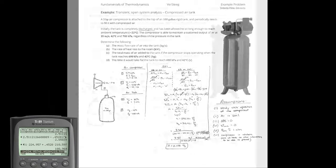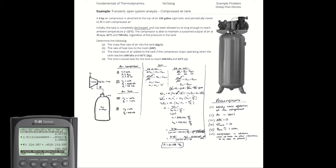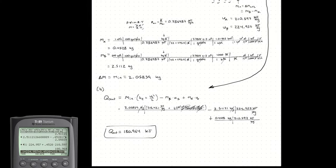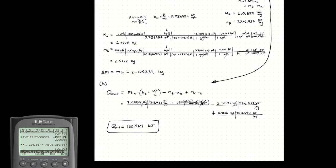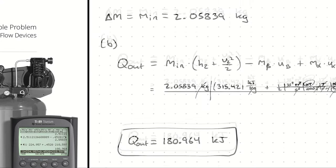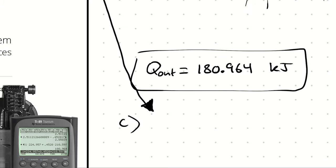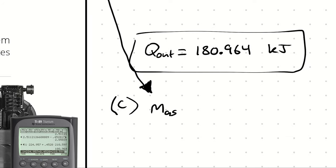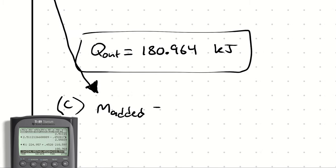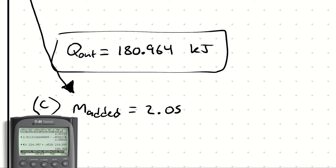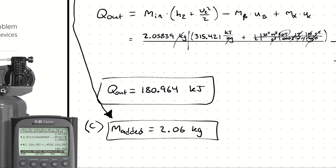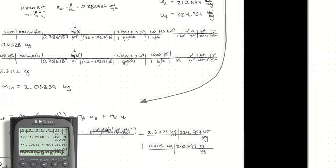For part C, the total mass of air added: we already computed that as 2.05839 kg, so approximately 2.06 kg. Moving on to part D on the next page.